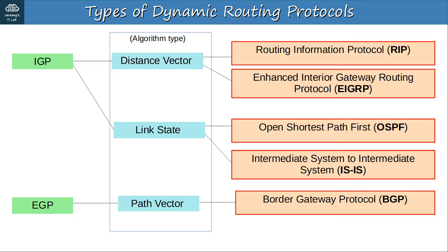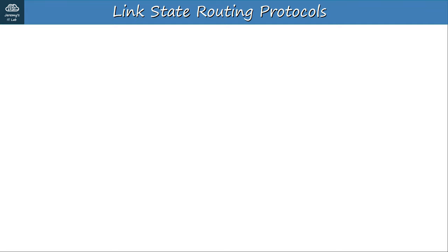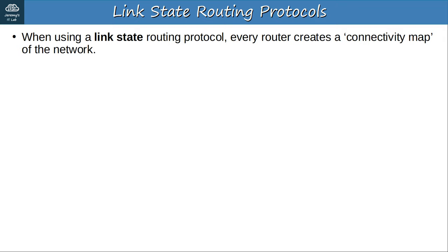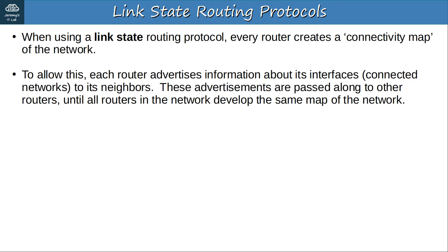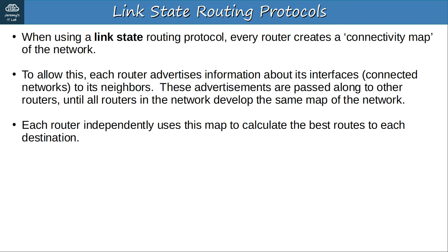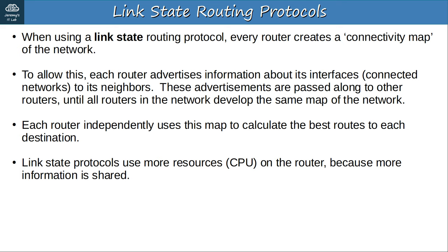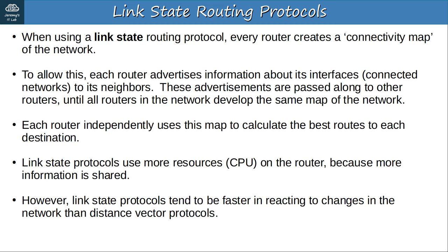Now let's review how link-state protocols function. When using a link-state routing protocol, every router creates a connectivity map of the network. Each router advertises information about its interfaces and its connected networks to its neighbors. These advertisements are passed along to other routers until all routers in the network develop the same map of the network — all routers have the same complete map. Then each router independently uses this map to calculate the best routes to each destination. Link-state protocols use more resources on the router because more information is shared, but they tend to be faster in reacting to changes in the network than distance-vector protocols.